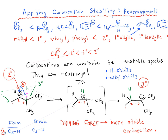The driving force for this rearrangement is a more stable carbocation. This is called a hydride shift, sometimes a 1,2-hydride shift, or more obscurely a Wagner–Meerwein shift. This is the first type of shift that can lead to a more stable carbocation.